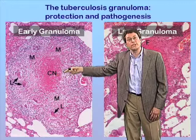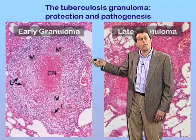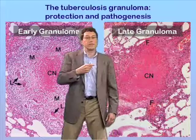So you can see there's a kind of striation of the lesion: a core of caseating necrosis, a macrophage zone where the bacteria are replicating, and a lymphocyte zone where the adaptive immune response is taking place.